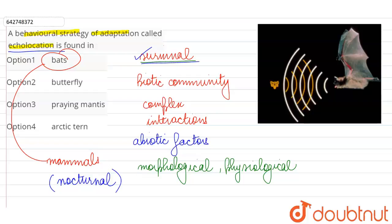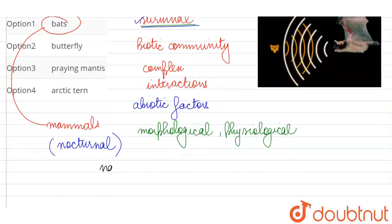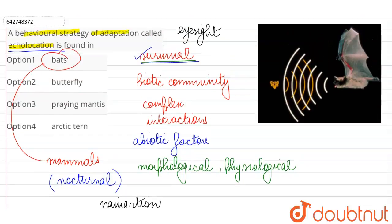So even though they have their vision, they have their eyesight, still in order to navigate at night in the darkness in their nocturnal environment and for their foraging activities, they use not their vision, not their eyesight, but the strategy called echolocation, where the bat is going to release some high frequency waves.